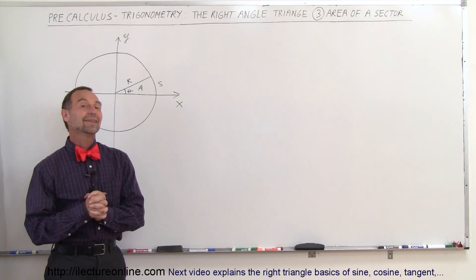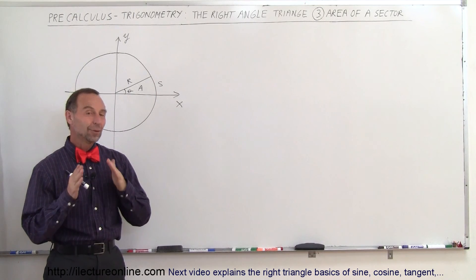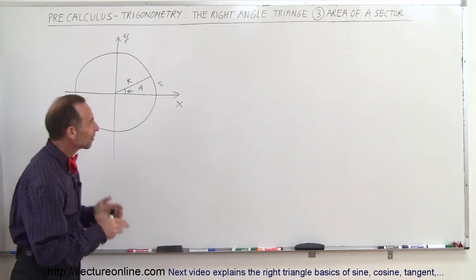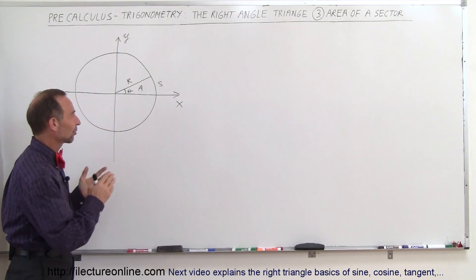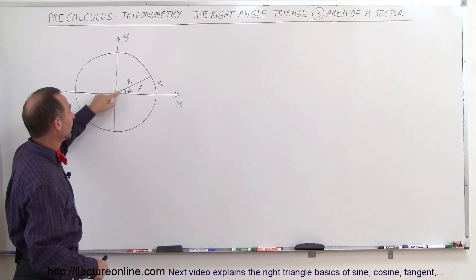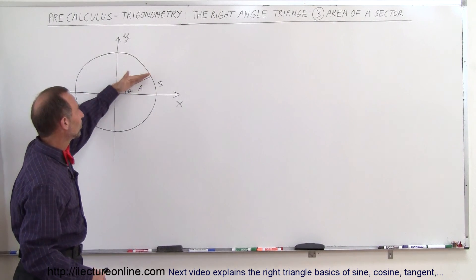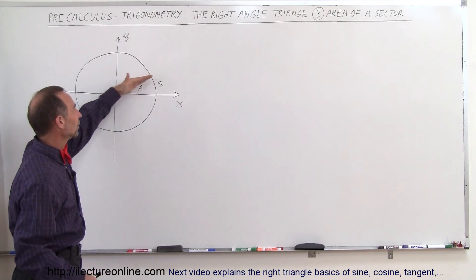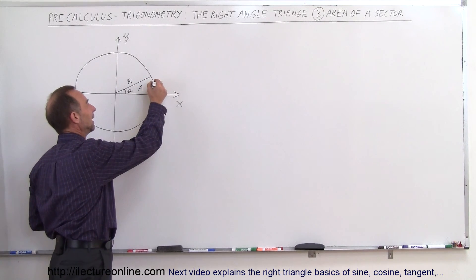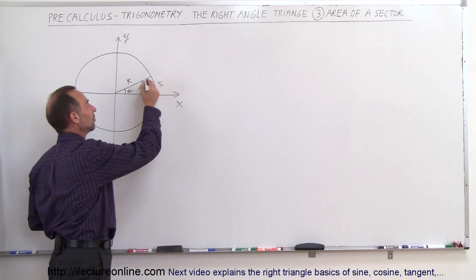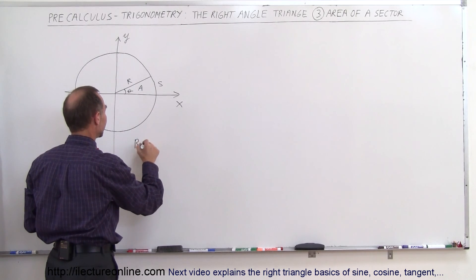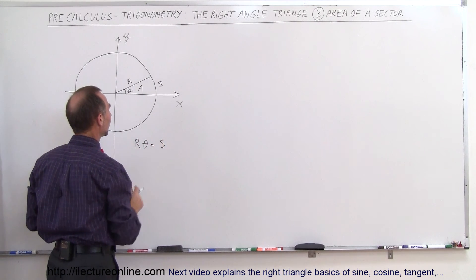Welcome to ElectronLine. Before we get going on right triangles, we're going to do one more thing: the area of a sector of a circle. There's going to be a relationship between the area, the angle, the radius of the circle, and the arc length s. We already know that r times theta is equal to s.